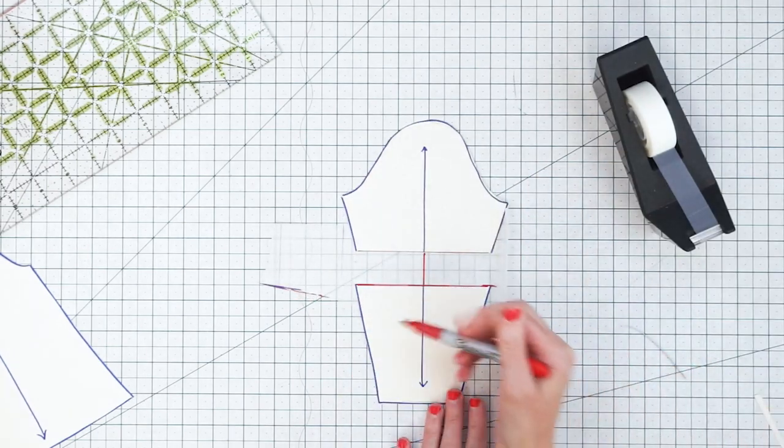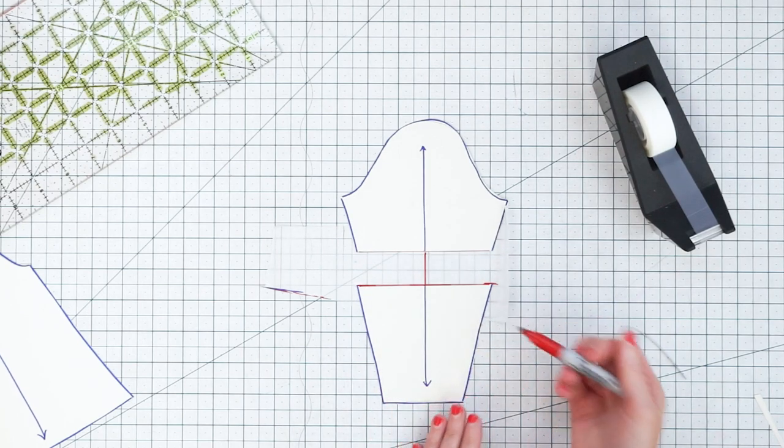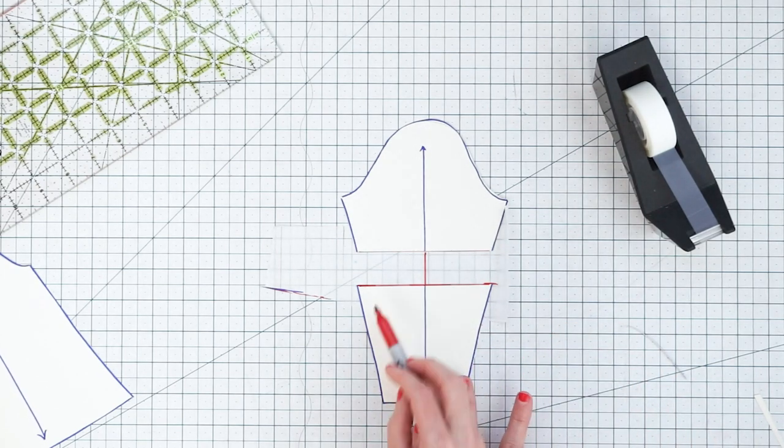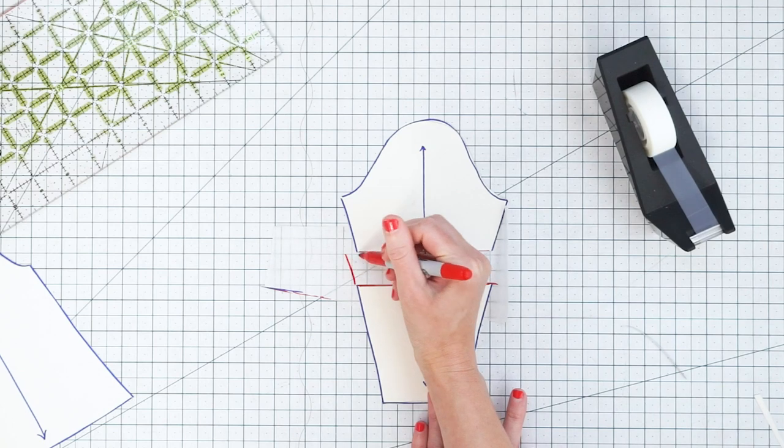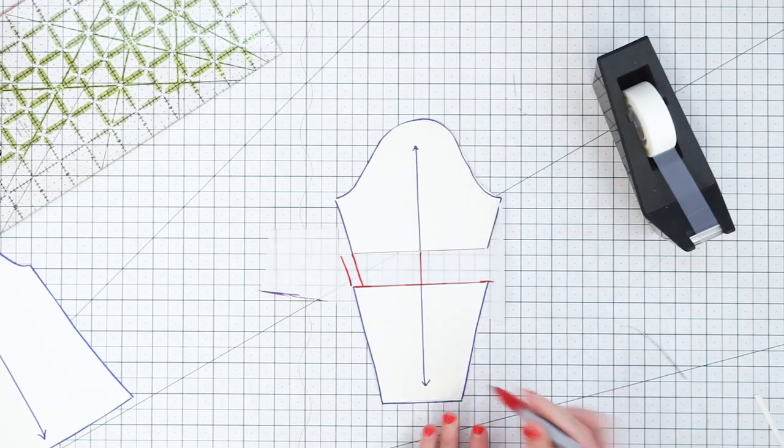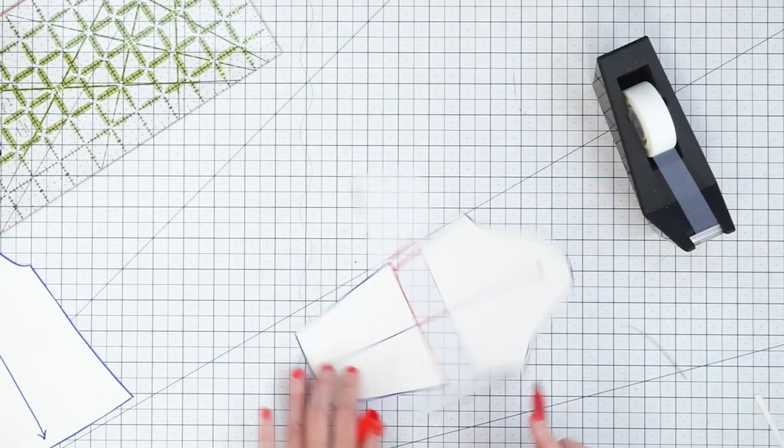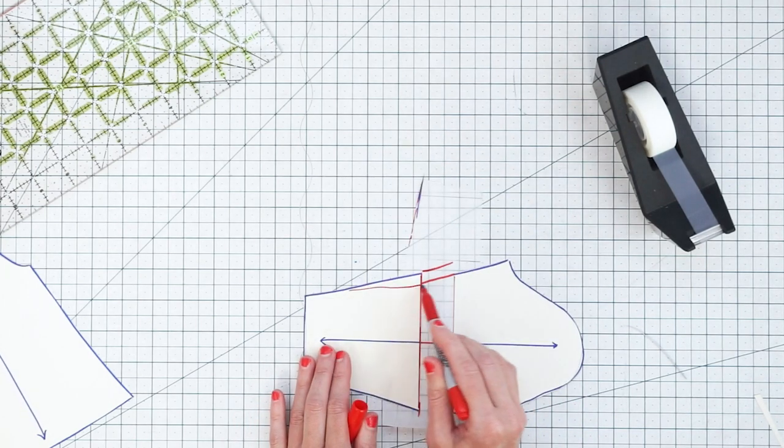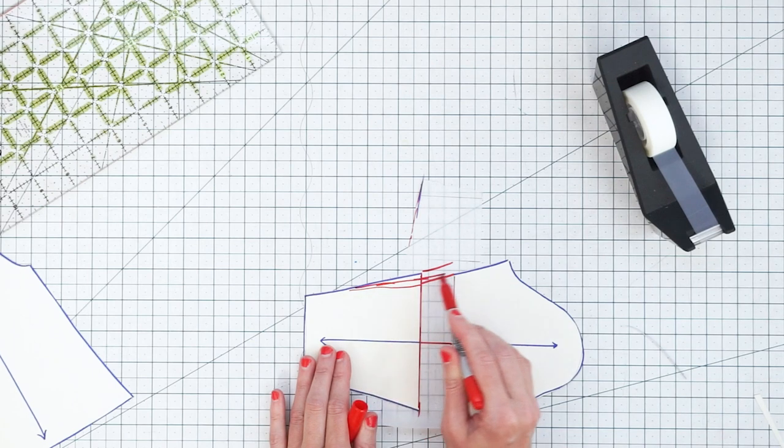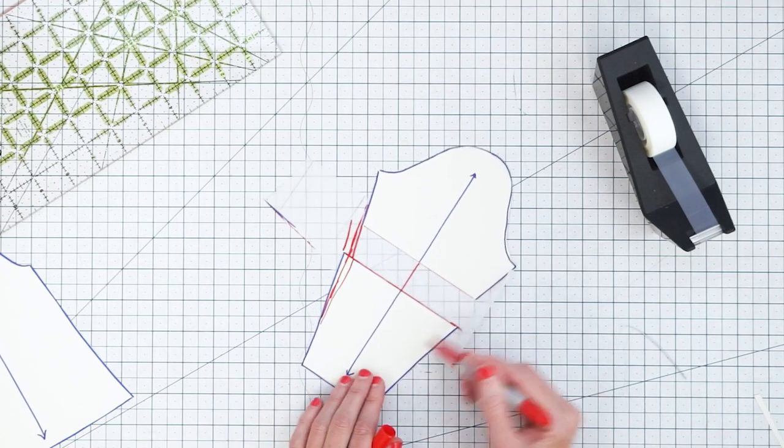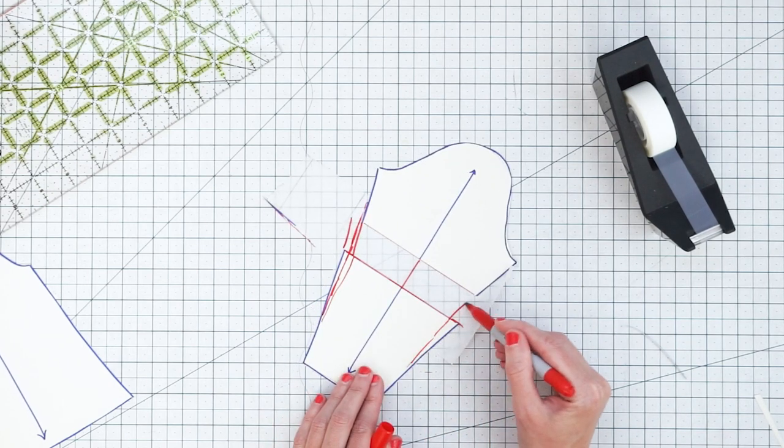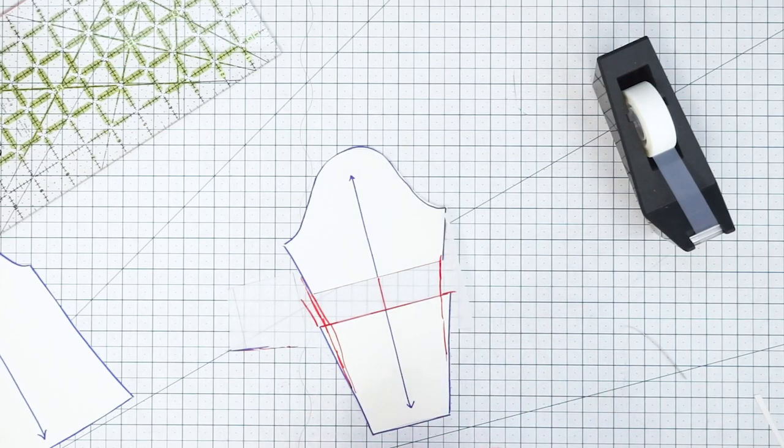And now you can see that our pattern piece is looking longer which is great, but we have a little bit of a jig jog here and if we just choose straight lines we're not really going to have a very nice smooth curve on our sleeve. So we can just draw in a new line here and just you just rough it in. It doesn't have to be super exact.